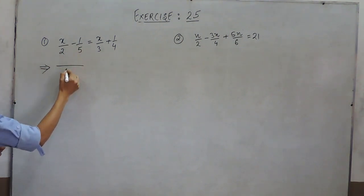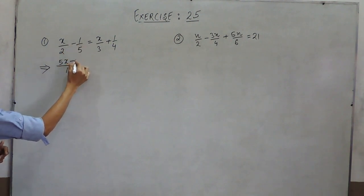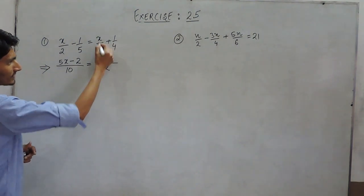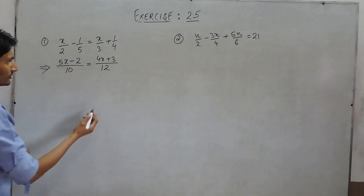Firstly, we are taking the LCM which will count to 10, and when this is multiplied, it will give 5x, and when this is multiplied it will give 2x. Here, the LCM would be 12 and this would be equal to 4x and this would be 3.